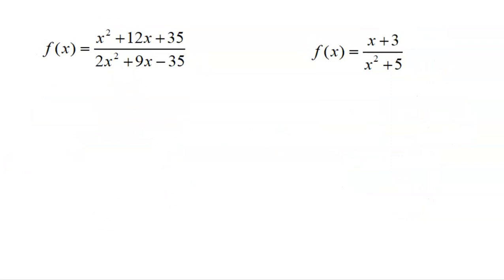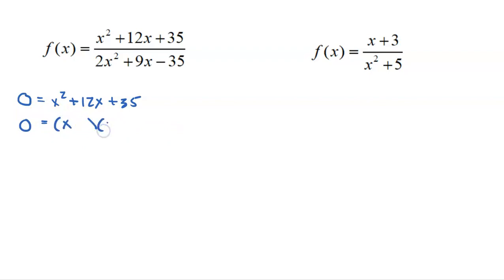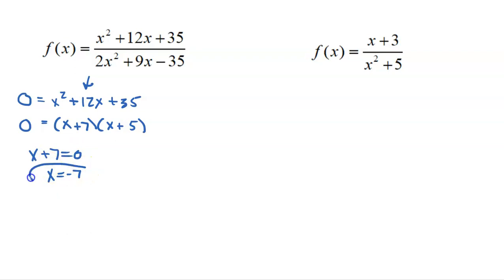Let's try a couple more. These ones are not factored, so it's harder to see what values make the numerator zero. We'll set the numerator equal to zero and factor it. Two X squared is X times X; 35 is seven times five. Seven X on the inside and five X on the outside combines to get 12X in the middle — a perfect factoring. So X plus seven equals zero gives X equals negative seven, and X plus five equals zero gives X equals negative five.